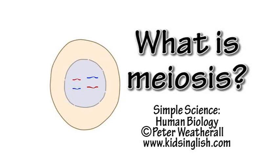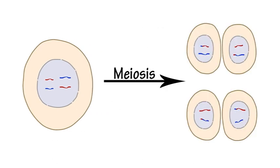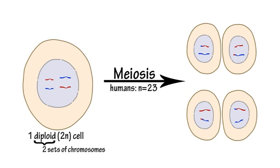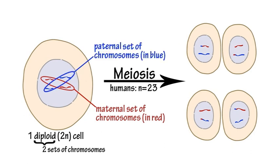Simple Science. What is meiosis? Meiosis is a process of cell division in which a cell containing two sets of chromosomes, one set from its mother and the other set from its father, produces four gamete cells, each of which contains a single set of chromosomes.